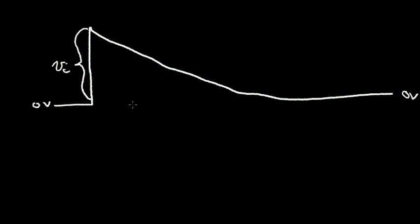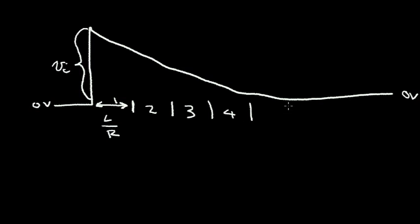Let's mark off units of time — approximately one time constant each. This time unit here is L divided by R. So here we have one, two, three, four, five time constants. At this point — five time constants after we apply input voltage VI — let's compute the voltage V out. Put your video on pause and see if you can solve that problem, then come back and I'll present the solution.